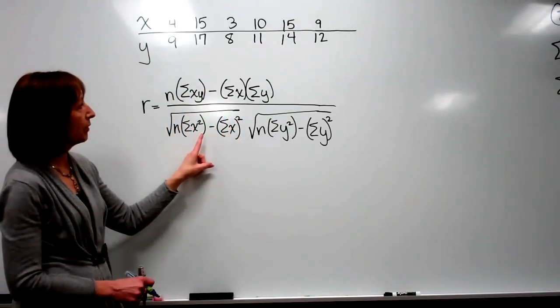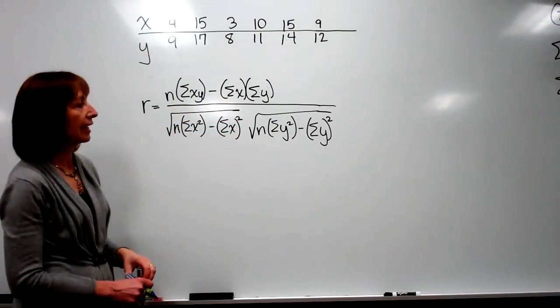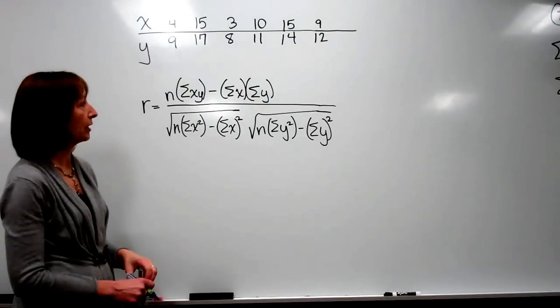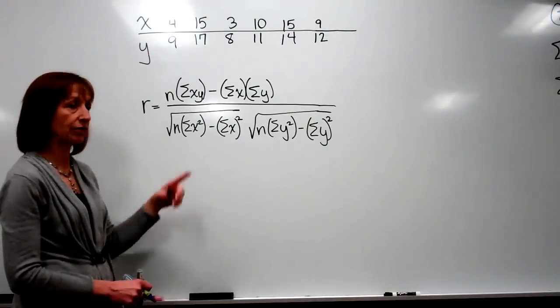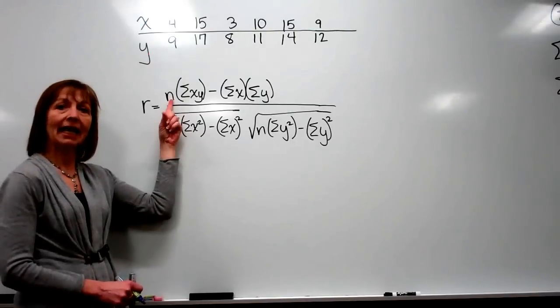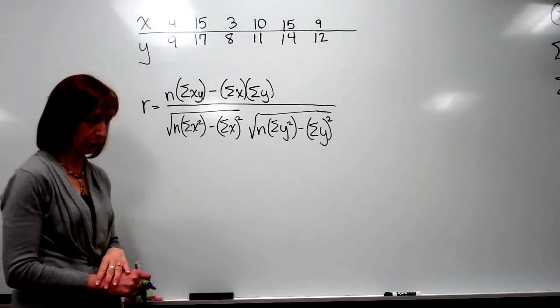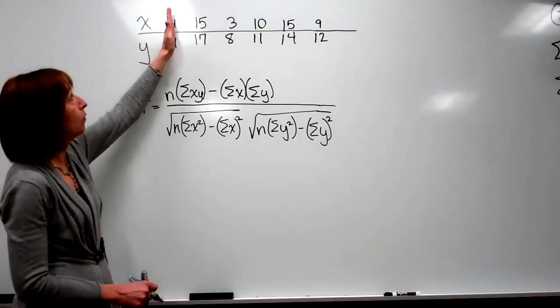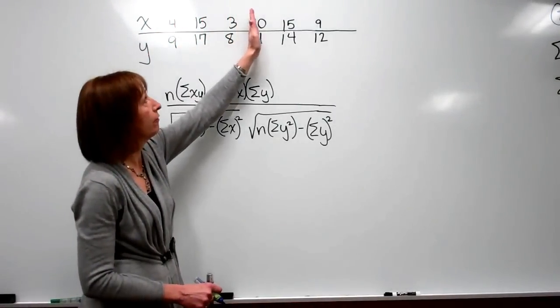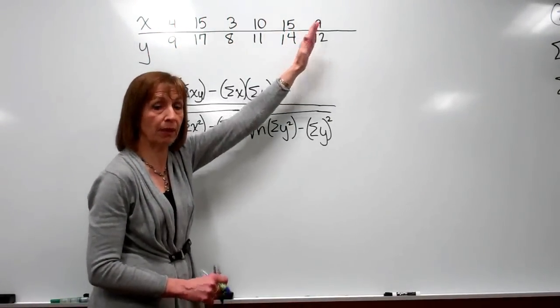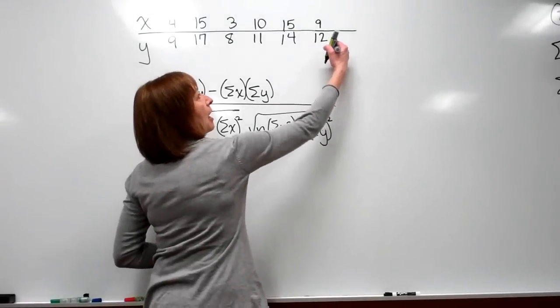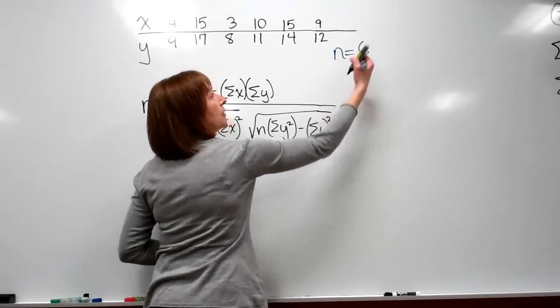Now recall some of these symbols that we're going to have to look at in this formula in order to plug in the right values. First of all, n. n is the number of ordered pairs that you have for your problem. So here we have 1, 2, 3, 4, 5, 6 ordered pairs. So in this case our n is equal to 6.